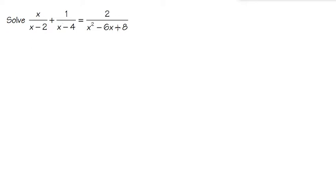Here we're going to solve this rational equation, and whenever we're trying to solve an equation that has fractions, the strategy is we'll multiply everything by the lowest common denominator. To do that, we'll look at all the denominators first, factor as much as possible, and then we'll construct the lowest common denominator.